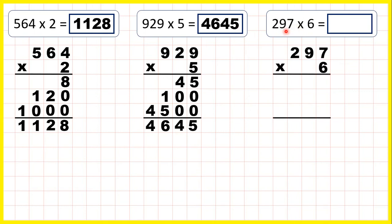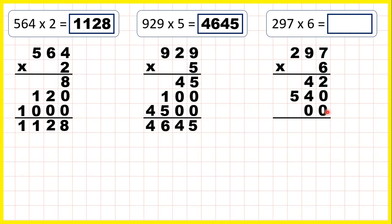Two hundred and ninety-seven times six. Seven times six is forty-two. We need a zero at the end of our second answer line, and nine times six is fifty-four. Now we need two zeros on the end of our third answer line, and two times six is twelve. We add up our answer lines and our answer is one thousand seven hundred and eighty-two.